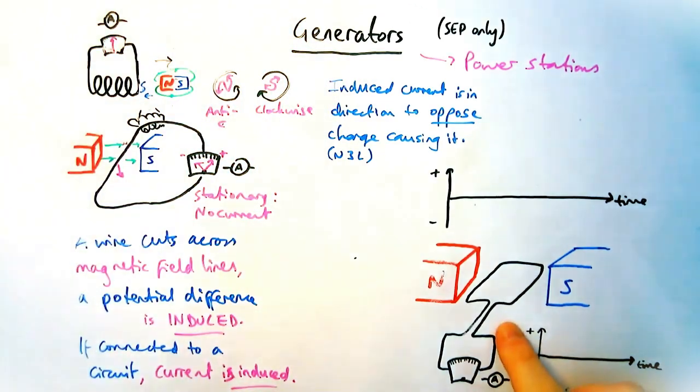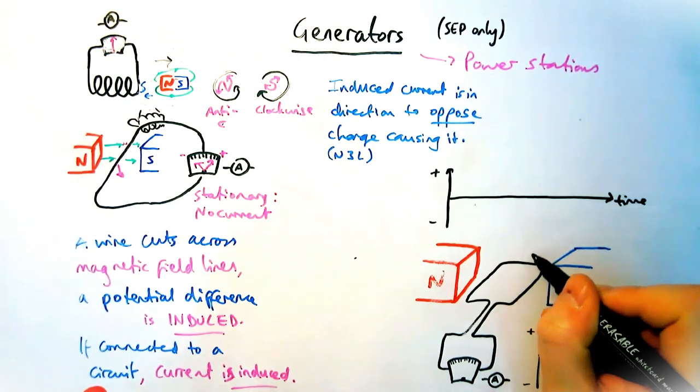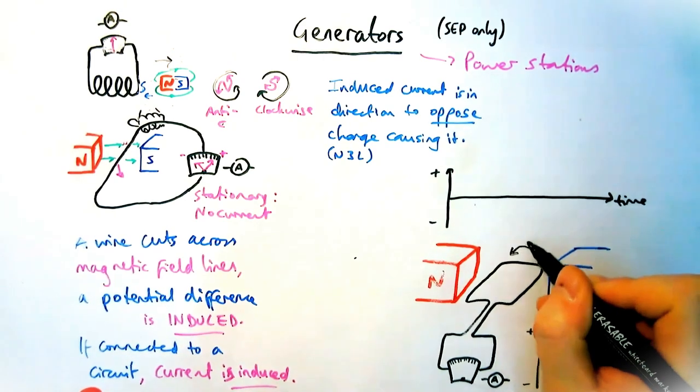Now, how do we use this effect to actually make a lot of electricity rather than little amounts in an ammeter? So you'd need to have a generator, which is a loop of wire.